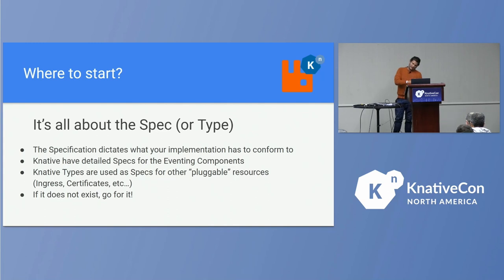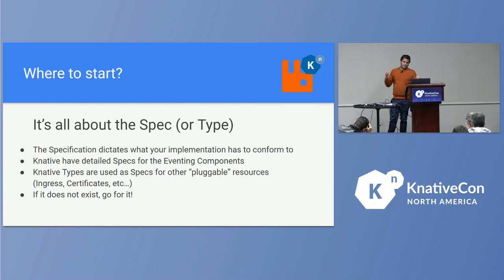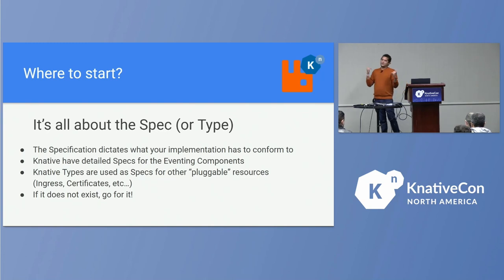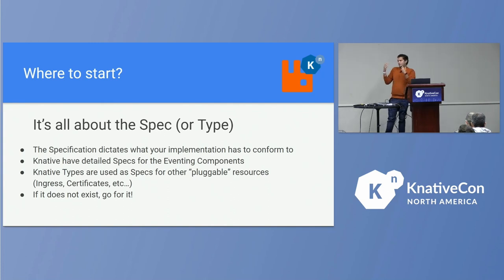Now that we know what Knative is and how to start your journey in open source, where do you start when you want to drive your integration or start your implementation from scratch in the Knative world? Basically, it's all about the spec or the type. The specification dictates what your implementation has to conform to and what your implementation has to look like for others to see.